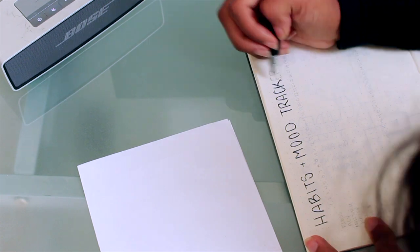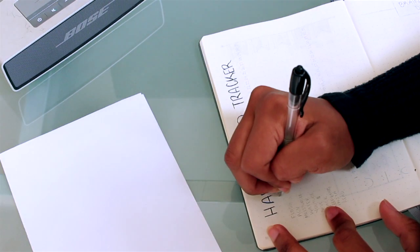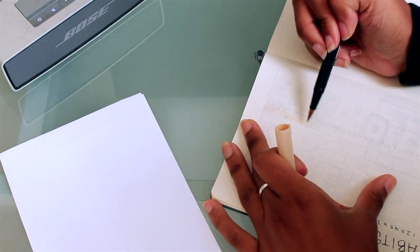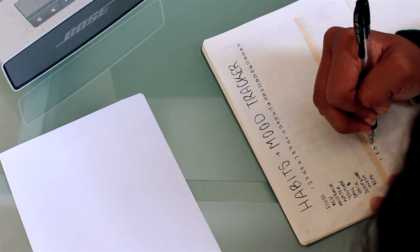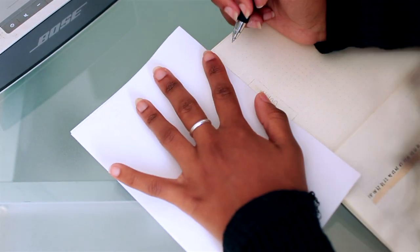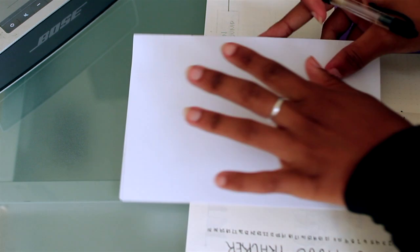On the next page I have my habits and mood tracker. I really liked this last month, this was probably like my favorite part of the entire bullet journal. I try my best to stay dedicated to it and it's interesting just to see how often I'm doing certain things I actually want to keep up with.